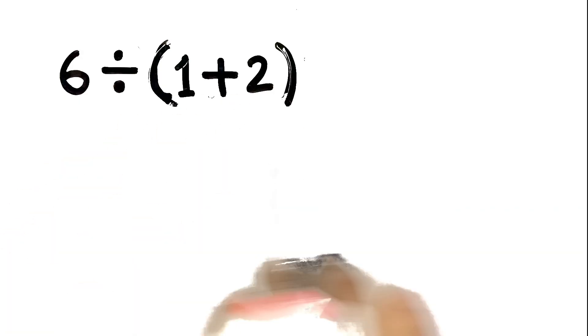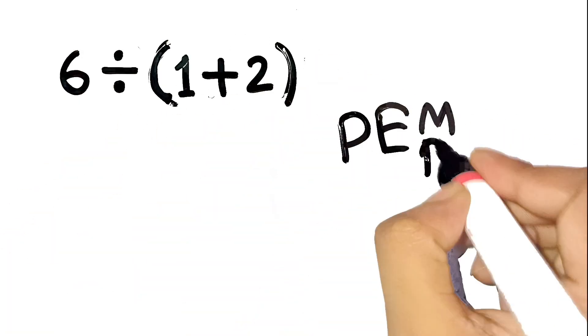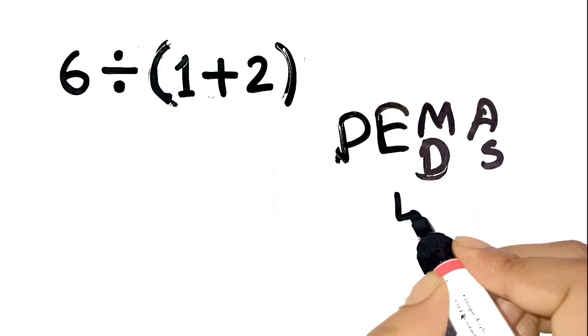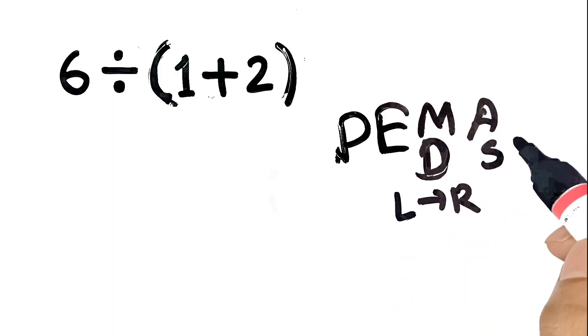Let's slow down and remember PEMDAS. That's parentheses, exponents, multiplication and division from left to right, and then addition and subtraction.